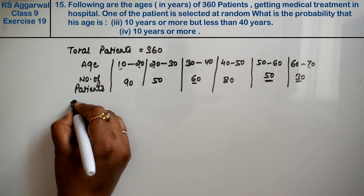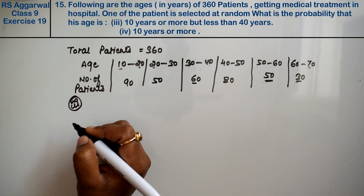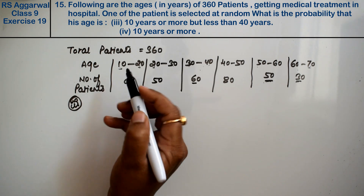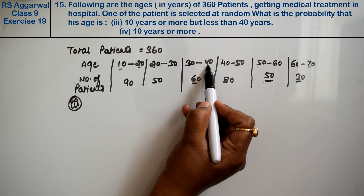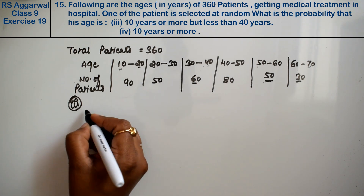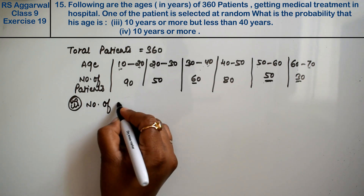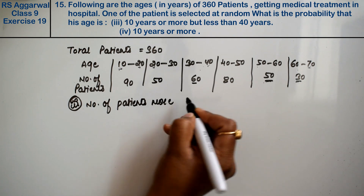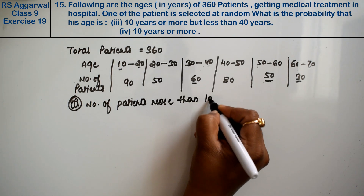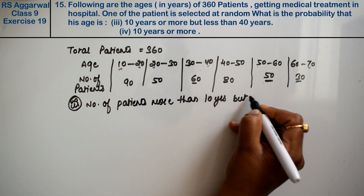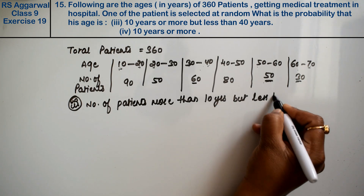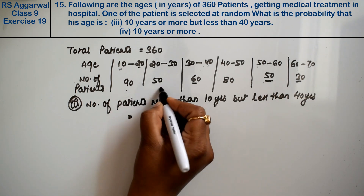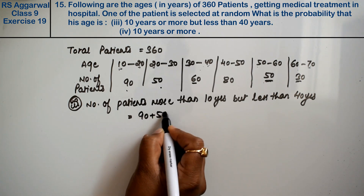Let's do the third part. What is the probability that his age is 10 years or more but less than 40 years? These cover three age groups. Number of patients: 90, 50, and 60. So 90 plus 50 plus 60 equals 200.